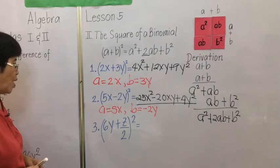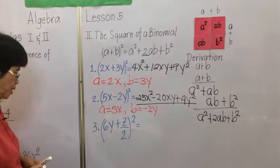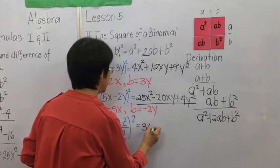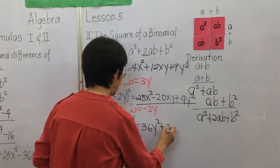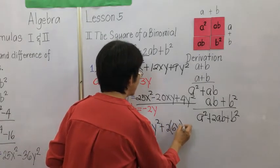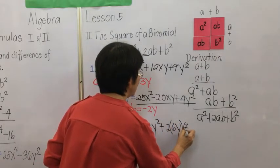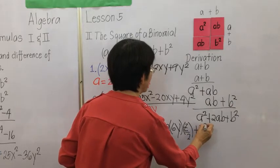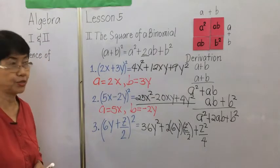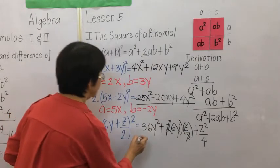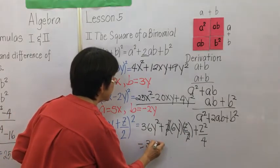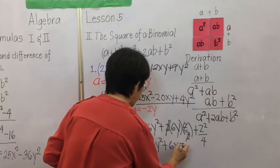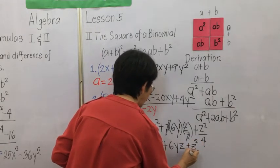Example 3: the quantity 6y plus z over 2, squared. Here a is equal to 6y and b is equal to z over 2. We square the first term to get 36y squared, plus 2 times the product of 6y and z over 2, plus the square of the last term which is z squared over 4. Simplifying the middle term, the 2 cancels, so the final answer is 36y squared plus 6yz plus z squared over 4.